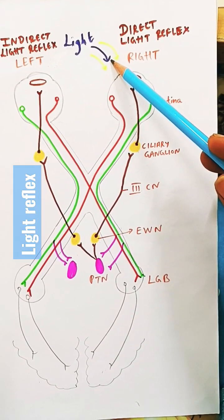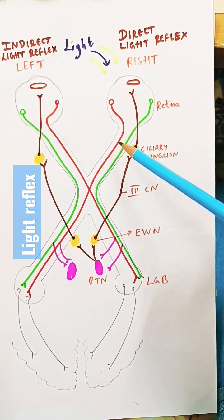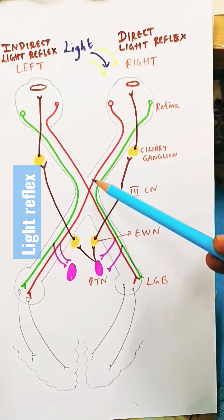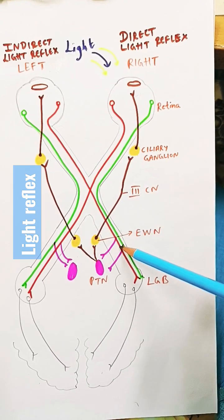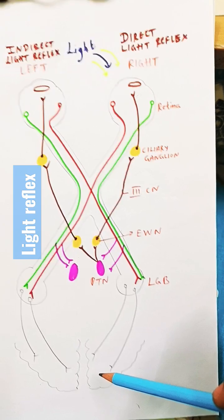The light reflex pathway: when light is shown into the right eye, the retina is stimulated. Via optic nerve, optic chiasma, and optic tract, the signal reaches the lateral geniculate body and finally goes to cortex for perception of light.